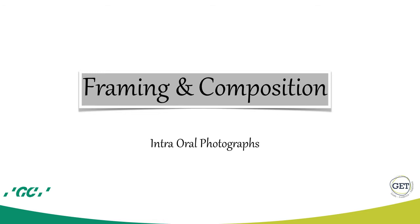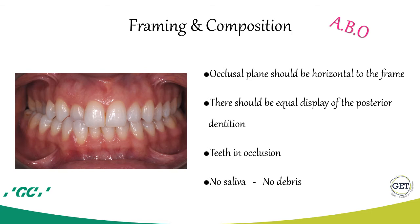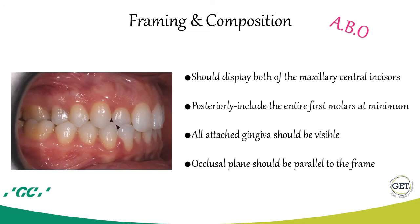Framing and composition for intraoral photographs: according to the guidelines of American World Photodontics, the occlusal plane should be horizontal to the frame. There should be equal display of the posterior dentition on the right and left sides. Teeth should be in occlusion and we should be very careful about saliva and debris. Lateral intraorals should display both maxillary central incisors, and posteriorly include the entire first molars at minimum. All attached gingiva should be visible and the occlusal plane should be parallel to the frame.